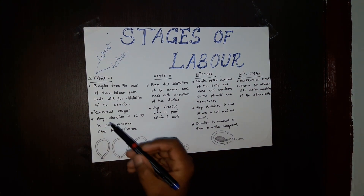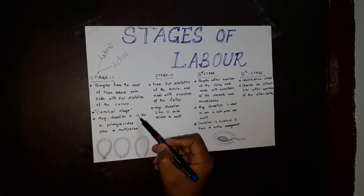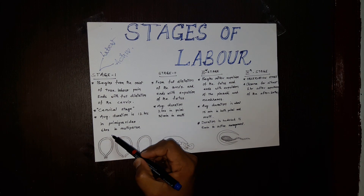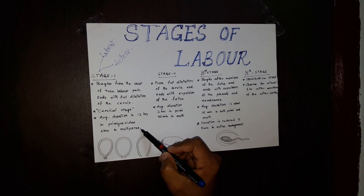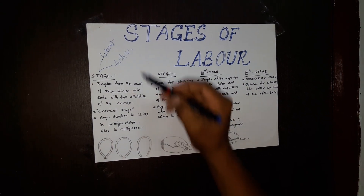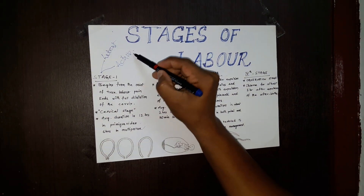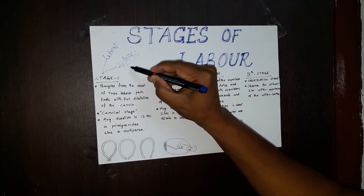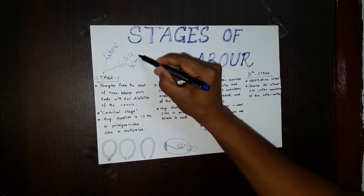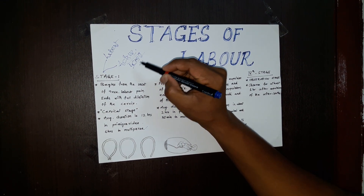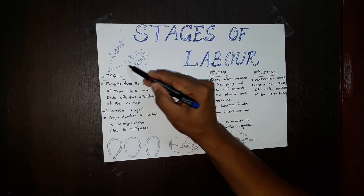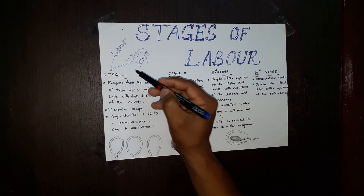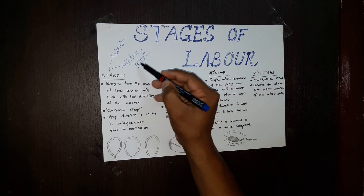The average duration is about 12 hours in primigravida and 6 hours in multigravida. The active phase begins after the dilatation of 4 cm of the cervix, and from this point you can start plotting in the partograph.